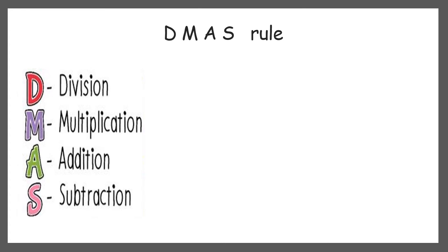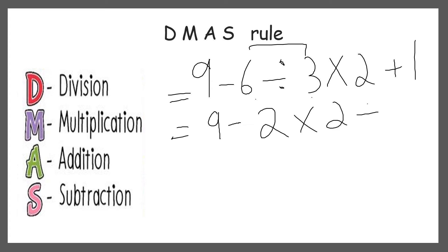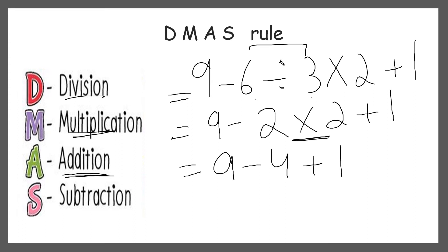Now let's solve the previous question with this rule: 9 minus 6 divided by 3 multiplied by 2 plus 1. According to this rule we should do division first. 6 divided by 3 is 2 because 3 twos are 6. Then write the remaining part as it is. After division we do multiplication: 2 times 2 is 4. Now we should do addition. When there is no sign with a number it means there is a plus sign there.